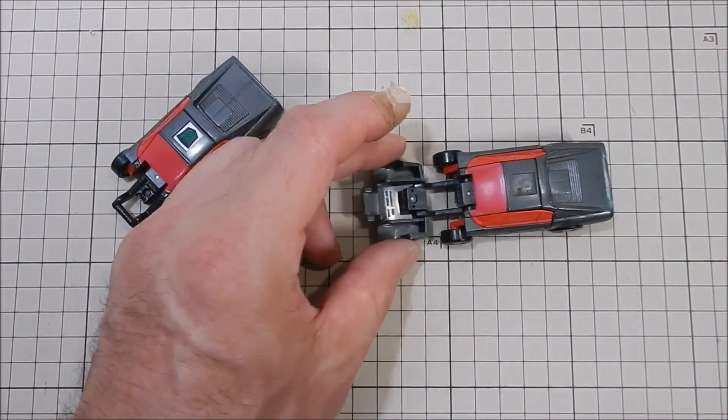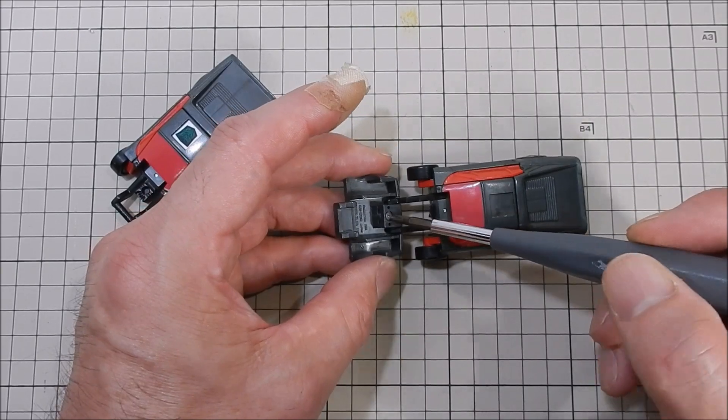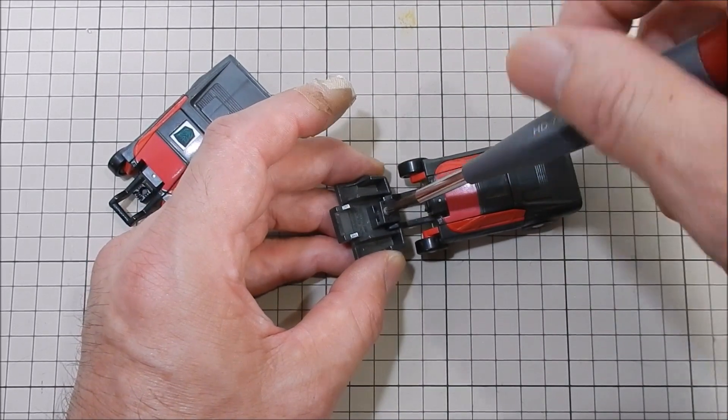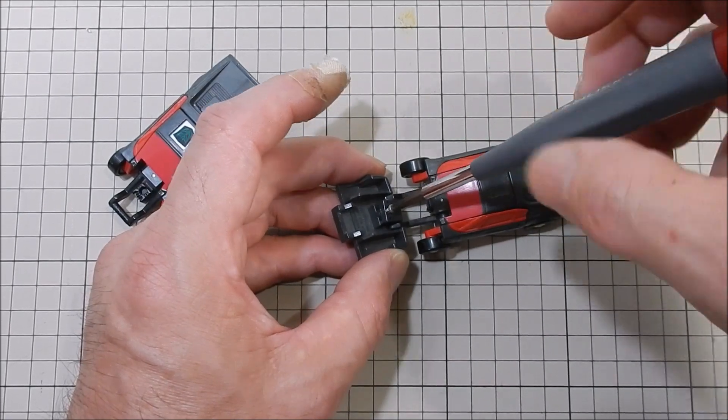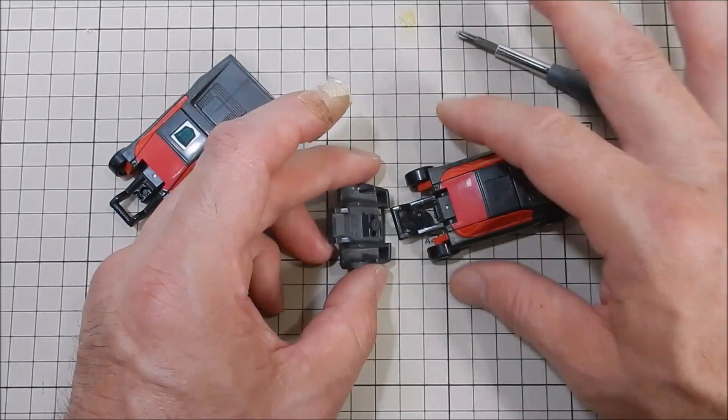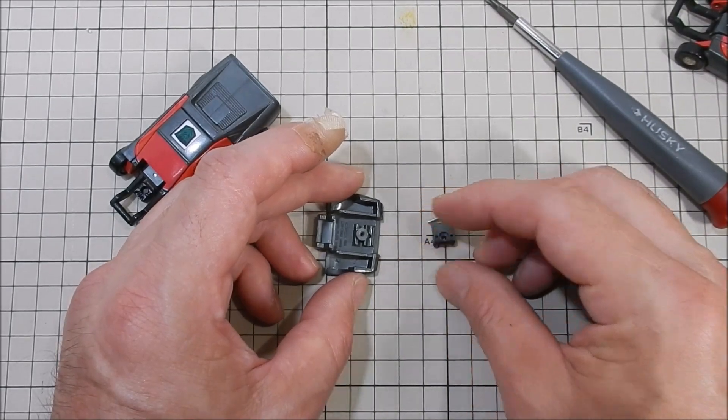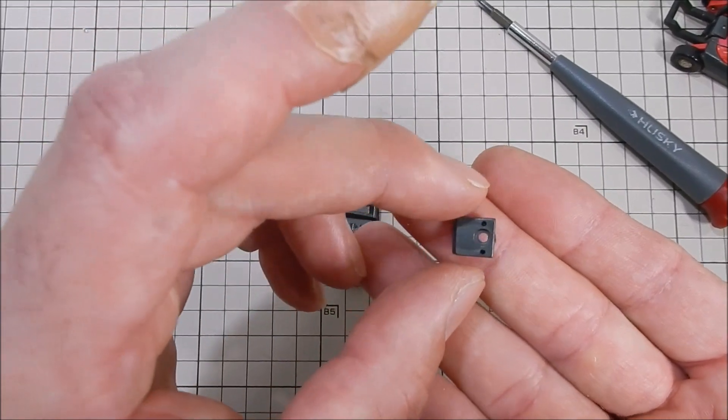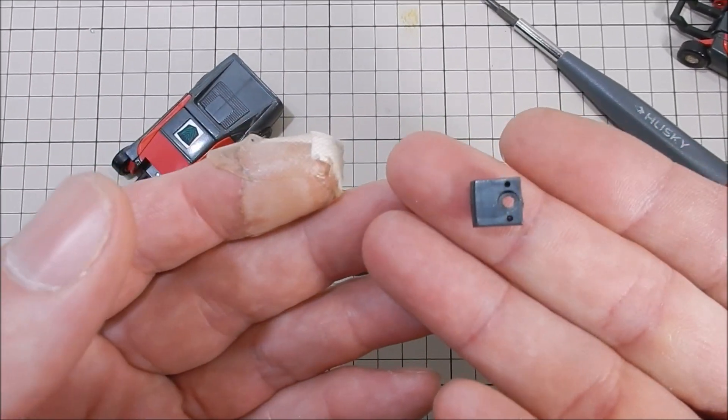So without further ado, ladies and gentlemen, let's get going. It's just one screw away. Take this little tiny screw out, and out comes this small piece. Make sure you don't lose that piece if you're ever replacing the hood for Wild Rider. So it's three pieces.